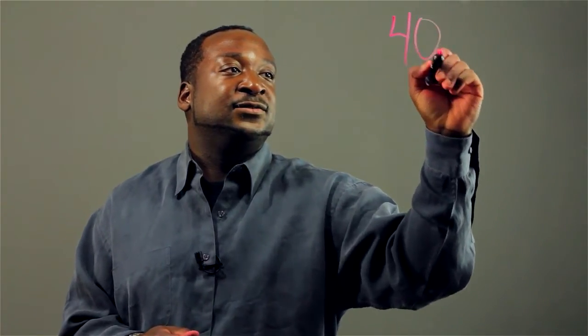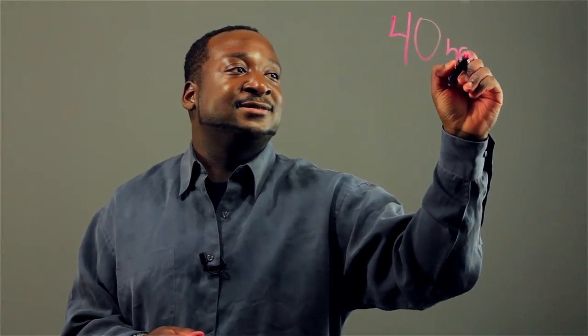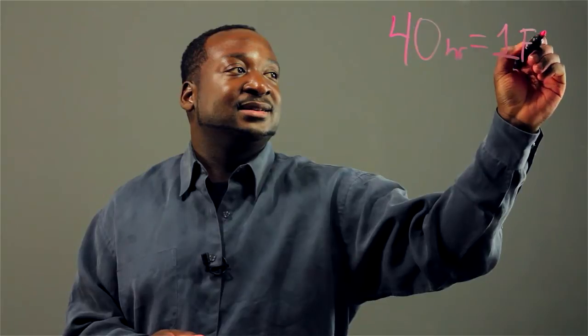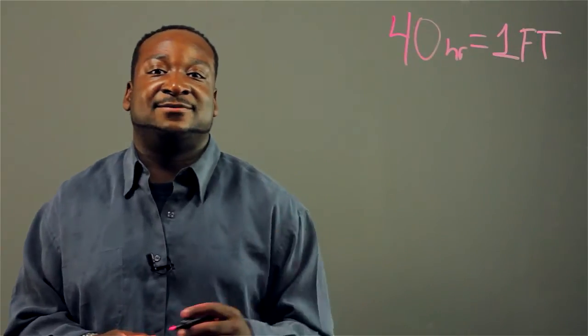First we always define the amount of hours that equals one full-time person working. Usually it's 40, so 40 hours equals one full-time worker.